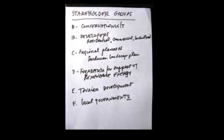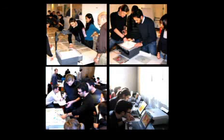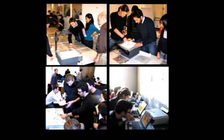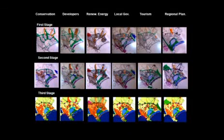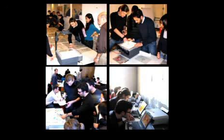Then we divided into six stakeholder groups: conservationists, developers, regional planners, an energy foundation, tourism development, and local government that wants to be re-elected. We told the students they could take no more than 20 projects — the best 20 that would help their client. So they go to the table, borrow the plastic, put it on an overhead projector or light table, and end up with a design. We're slowly taking the diagrams that are most frequent and putting them into the computer.